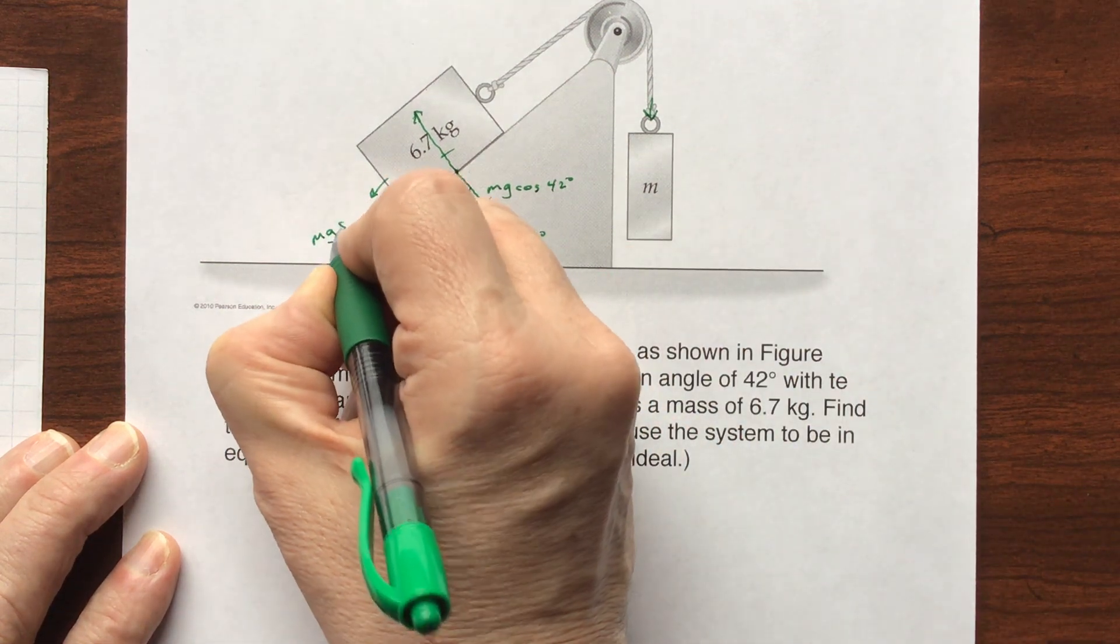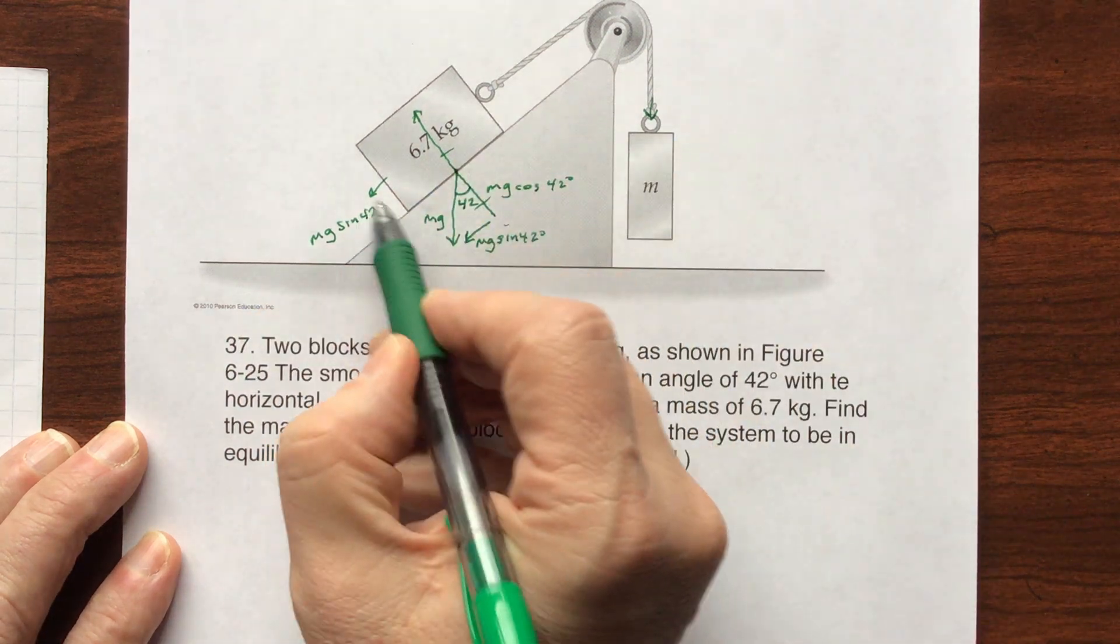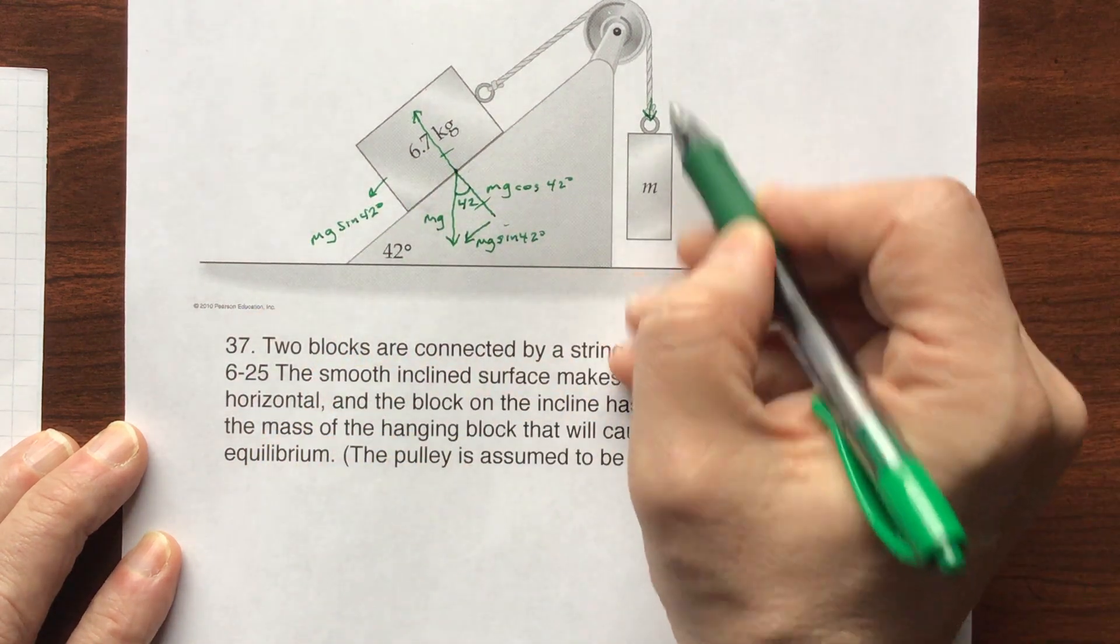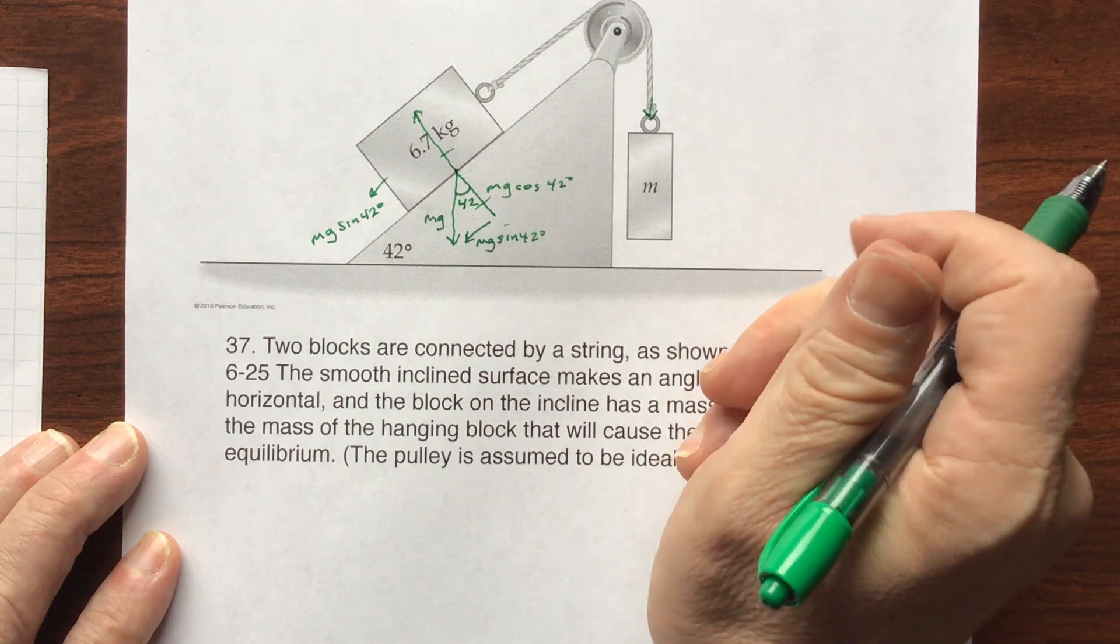mg sine of 42 degrees, and we're going to see whatever this is in newtons is going to equal this in newtons, and then we'll divide by gravity.